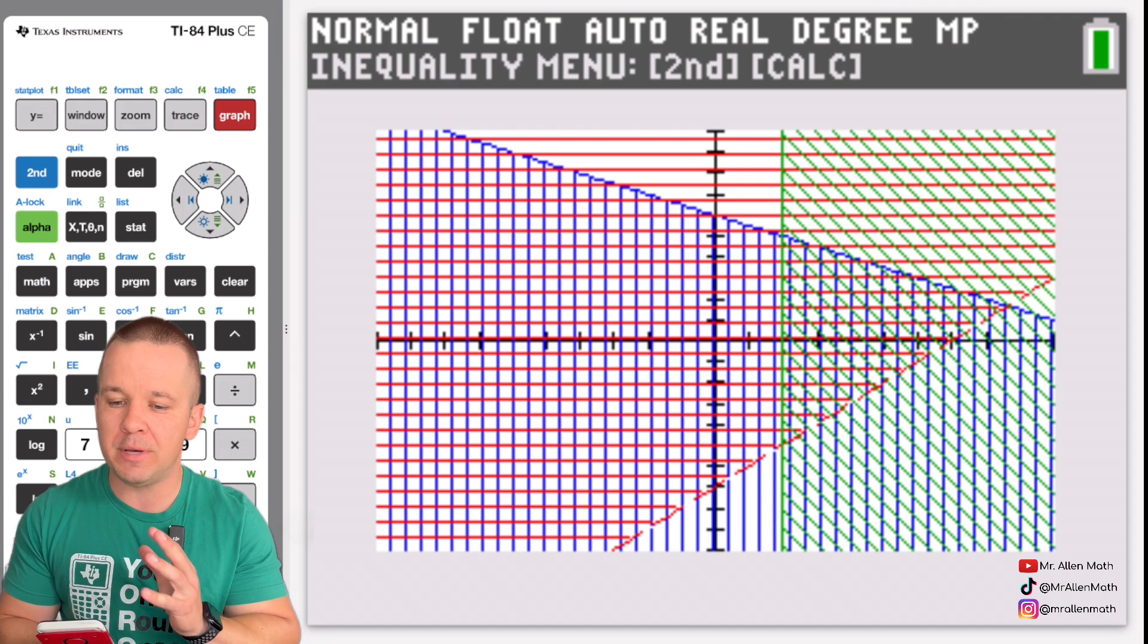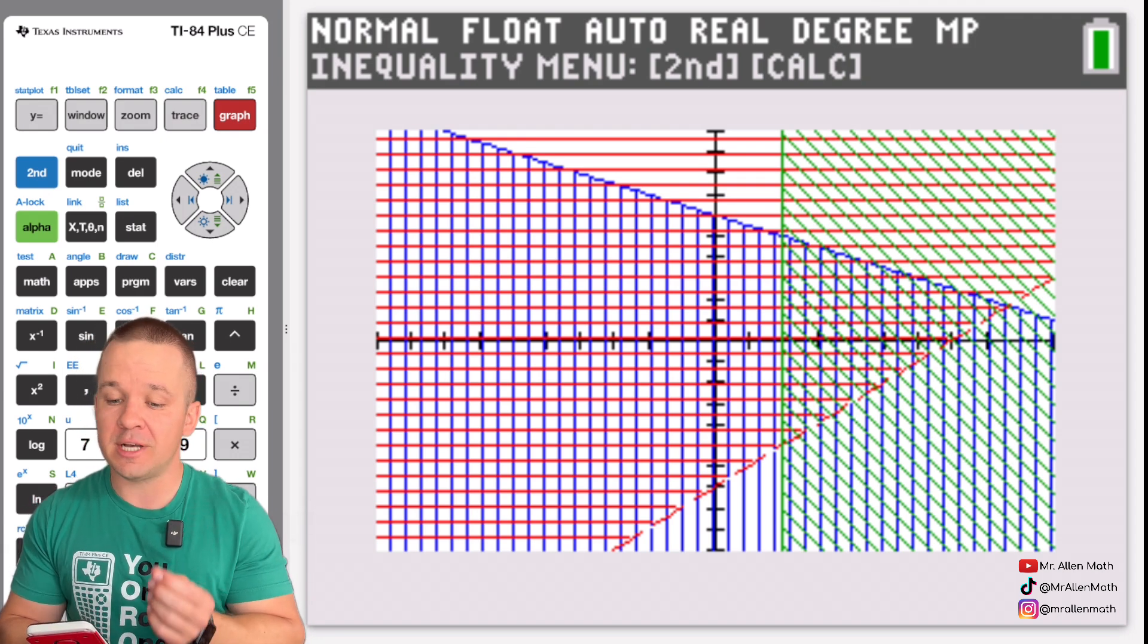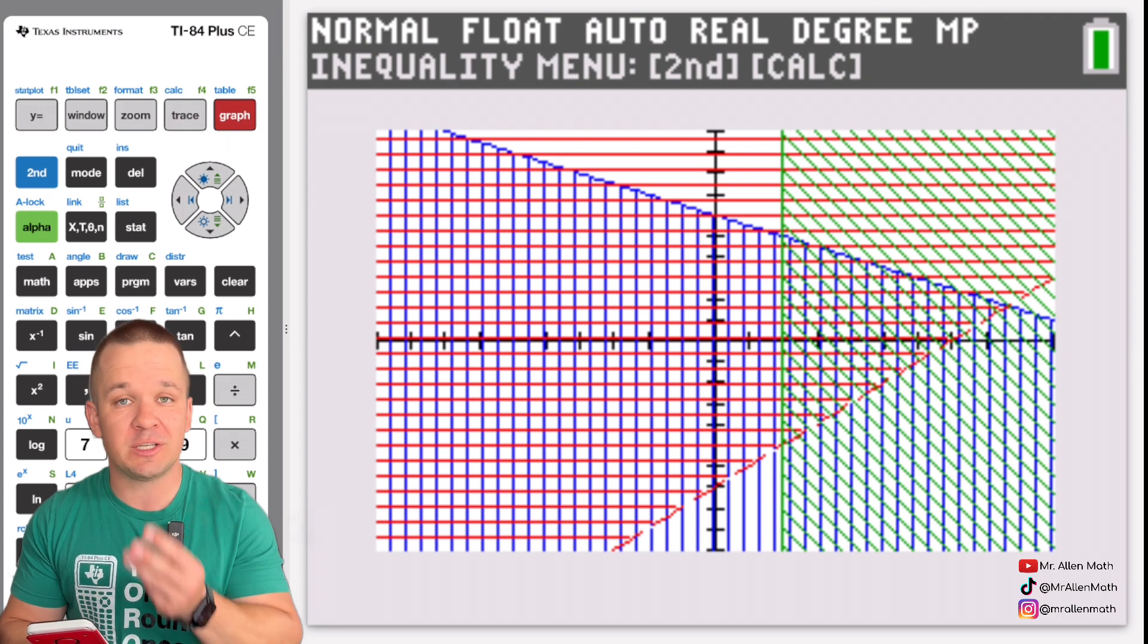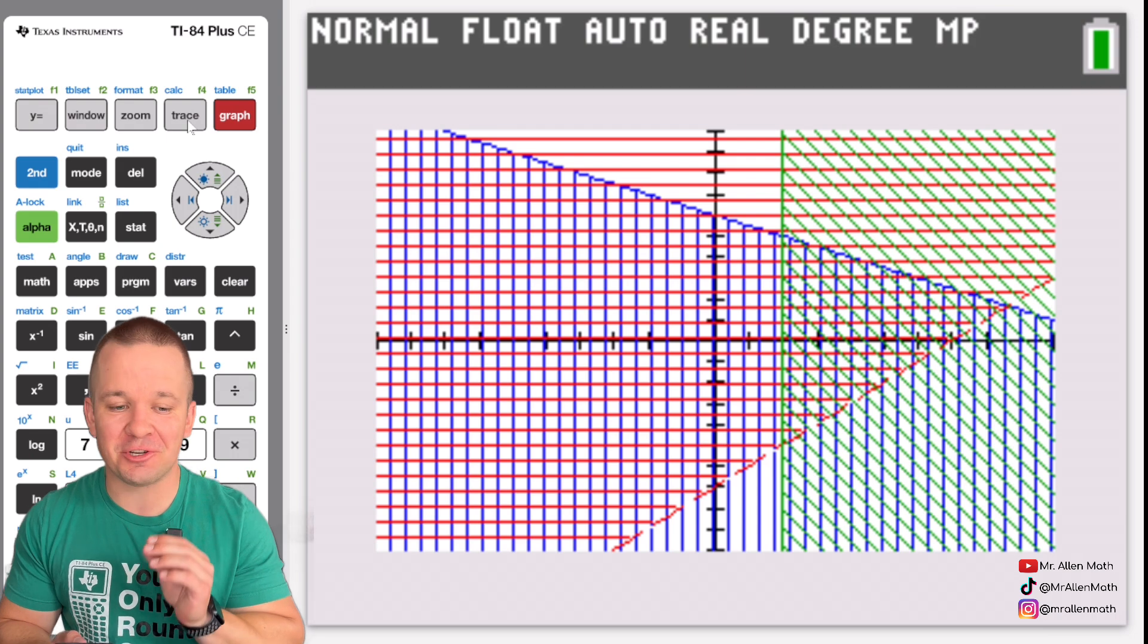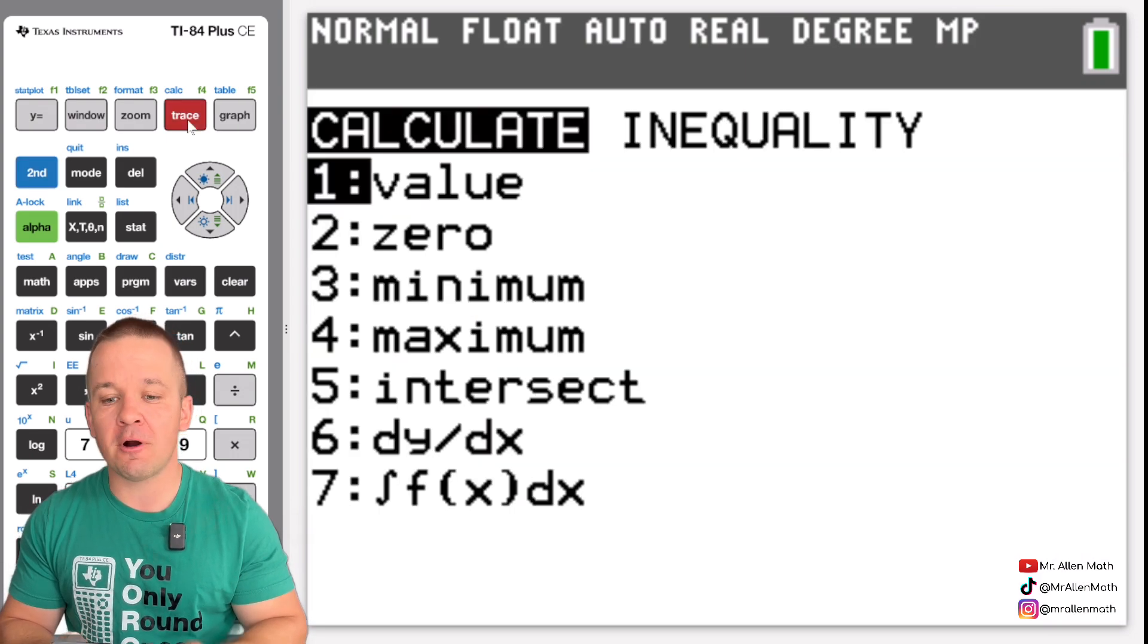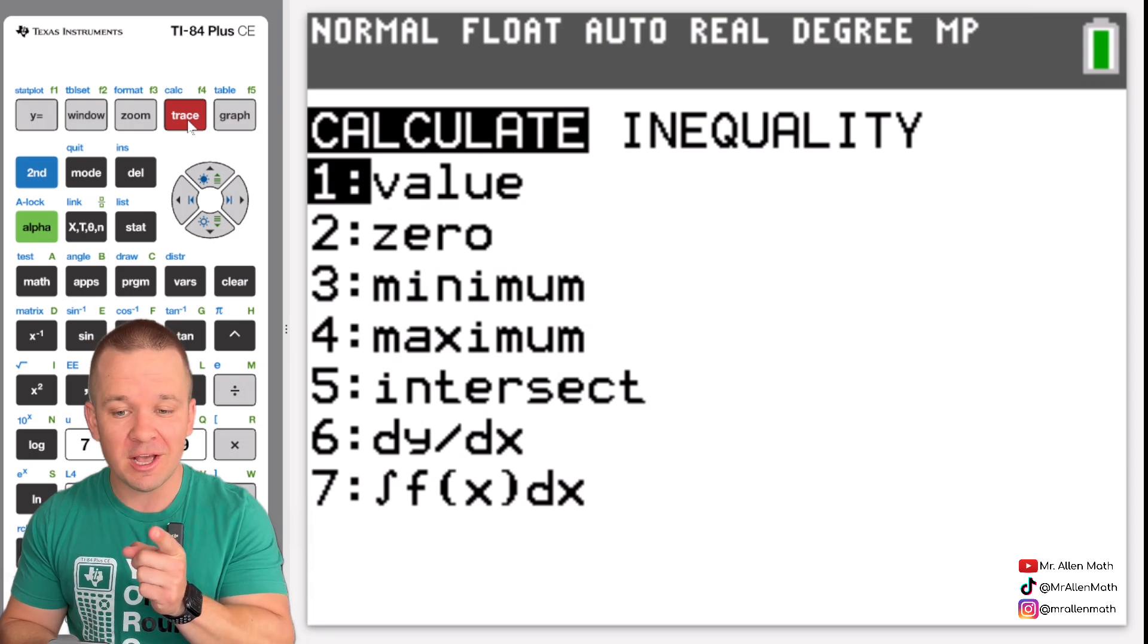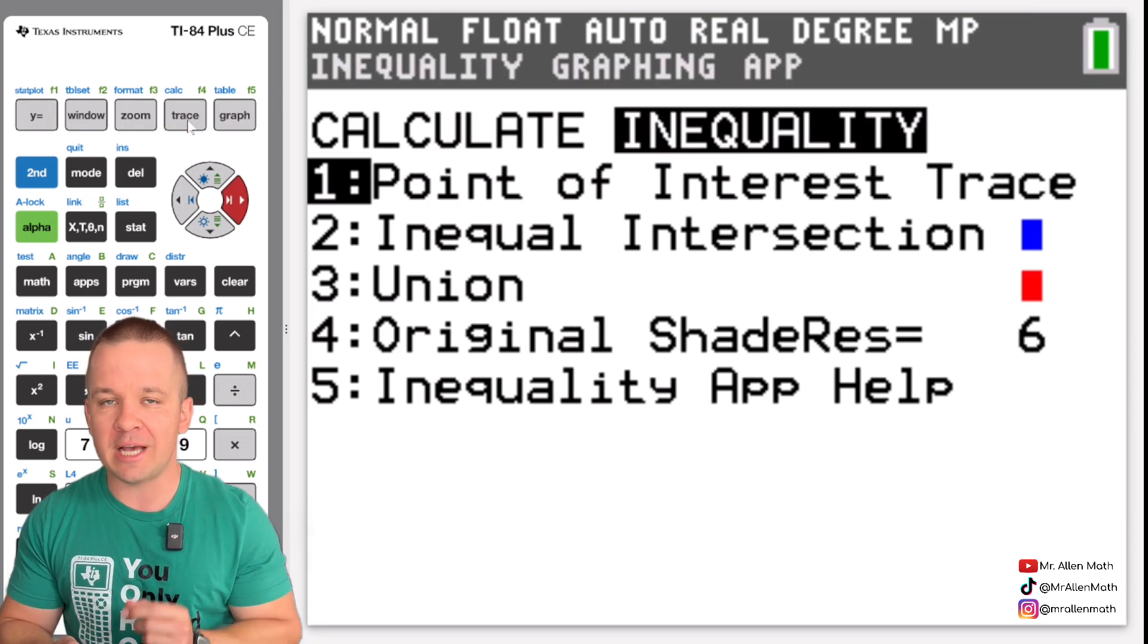Okay so you can really see where the three overlap. I mean it can get a little bit busy in there so it'd be nice if there was a way to just isolate the intersecting graphs that shaded region that's been shaded three times. If only there were a way to just see the intersection of those three graphs. So we're going to hit second and then trace for our calculate menu and you're going to notice there's an inequality option now that shows up when you're in this app.